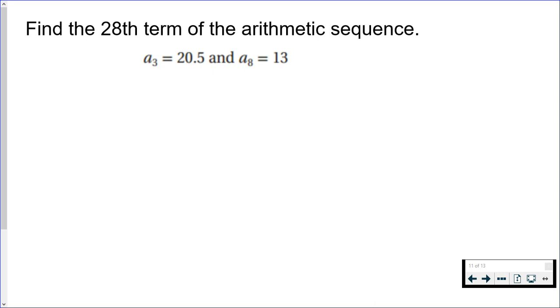We're going to find the 28th term of an arithmetic sequence that has a third term of 20.5 and an eighth term of 13. This is going to take a few steps. So the first thing we're going to do is figure out our common difference.